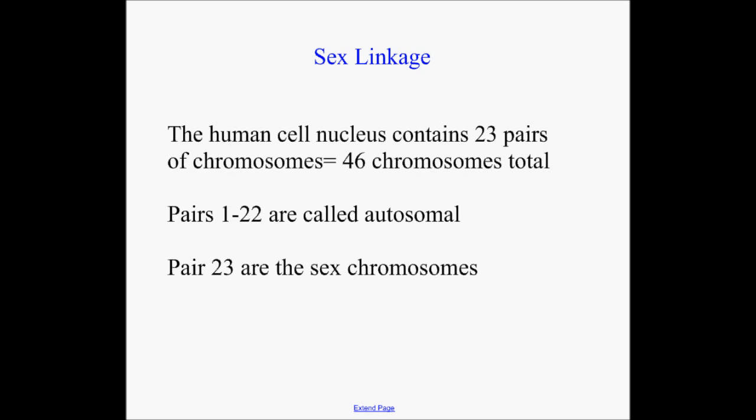The easiest type of gene linkage to talk about is sex linkage — that is, genes which occur on the 23rd pair. Just to remind you, the normal human cell nucleus contains 23 pairs of chromosomes, or 46 chromosomes. The first 22 pairs we would call autosomal — a good word to know. But we're concerned with that 23rd pair today, which we'd call the sex chromosomes. Because they're so important to human genetics, we give them names: we call one of them the X, and one of them the Y.